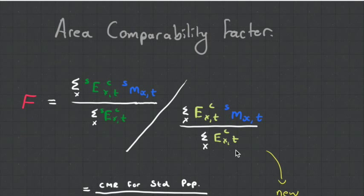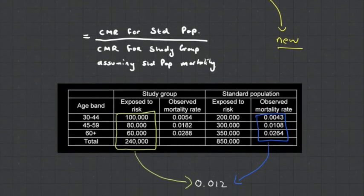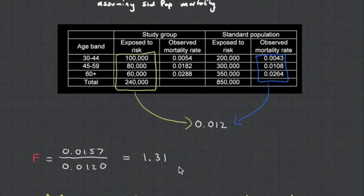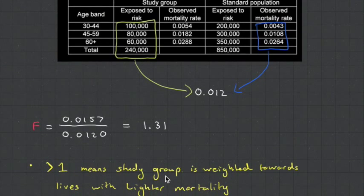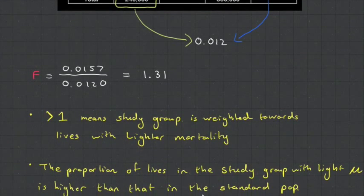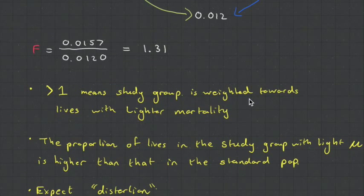What this is doing is it's comparing the study group's age structure to the standard population's age structure. By getting a value of 1.31, this means that the study group is weighted towards lives with lighter mortality. Therefore the proportion of lives in the study group with light mortality is higher than that in the standard population. And because it's not one, we can therefore expect distortion.